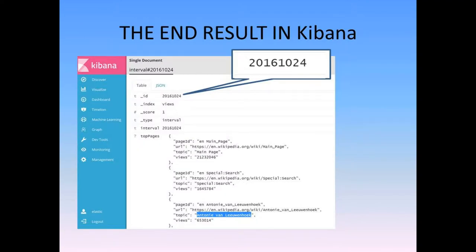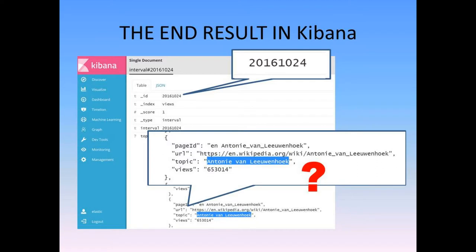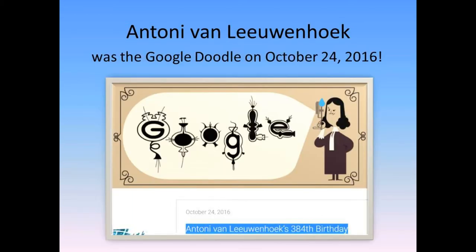Now let's go into the Kibana interface to look at some of the final data. Here is the record showing the top 500 web pages for October 24th, 2016. We could scroll down to see all 500, but let's look at the top few. The top page is, predictably, the Wikipedia homepage. The second is the search page. But what's here in third place? Anthony Von Löwenhoek? Why would he be the most popular topic page on October 24th, 2016? Any guesses? Turns out, Anthony Von Löwenhoek was the Google Doodle for that very day, explaining his sudden spike in popularity.